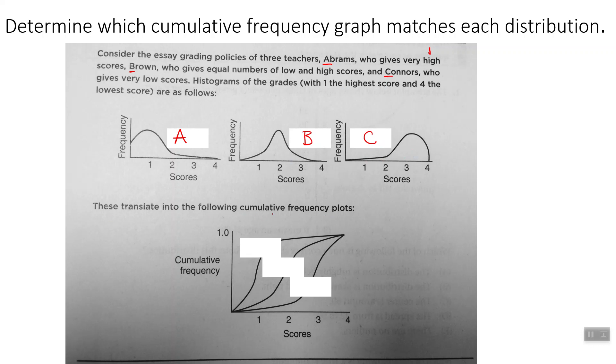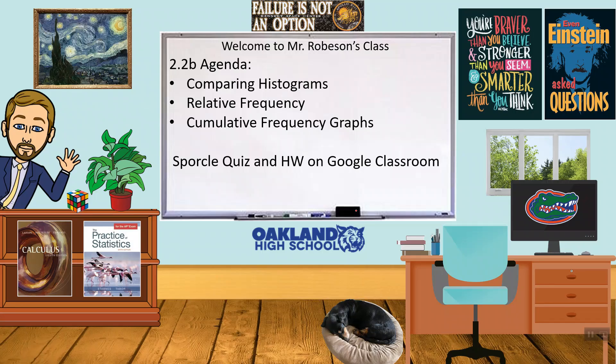These translate into the following cumulative frequency histograms. So it looks like with A, most of the data is right at the start. That means we'll start going up very quickly because most of the data is here. So we look over to these graphs and which one goes up very quickly to start. Well, that's this top one. So this top one is going to be our graph for A. Let's take a look at C. This one doesn't have any data really until we get to 2. So we're going up very slowly until we get to 2. So the one that's going up the slowest until we get to 2 is the bottom one here. So that's going to be Connors. And that leaves brown in the middle here, B. It goes up in between them. Then most of its data is in the middle. It goes up the fastest there. And then slows down at the end because most of its data was in the middle.